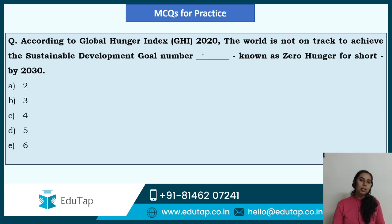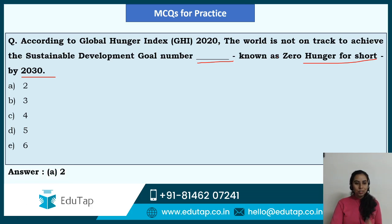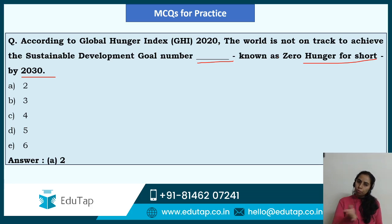Next question: according to the Global Hunger Index 2020, the world is not on track to achieve sustainable development goal number dash, known as Zero Hunger, by 2030. Options: 2, 3, 4, 5, or 6. Our answer is option A — that is SDG2. Do find out about goals 3, 4, 5, and 6 also. There is an infographic available with all 17 goals — you can google it easily, print it out or write them down for easy reference.